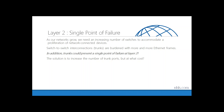Let's start our conversation at layer two to find the single point of failure with our switches and ethernet. As our networks grow, we've seen a proliferation of network-connected devices — not just PCs, servers, and printers — so we need an increasing number of switches. These switch-to-switch interconnections, referred to as trunks, are increasingly burdened with more ethernet frames. In addition, these trunks could present a single point of failure at layer two. The solution is to add additional trunk ports.